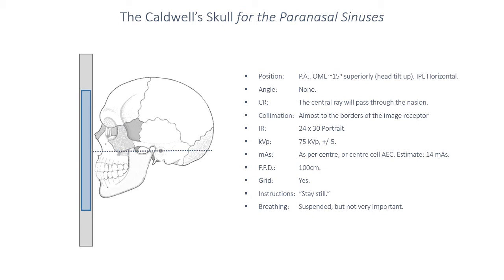That means the anatomy also needs to be moved and tilted to correspond to this change in beam angulation. As such, instead of having the nose and forehead against the image receptor, the chin and head is tilted up 15 degrees from the previous position. The patient is in a PA position with the orbitomeatal line approximately at a 15 degree cephalad angulation — that is to say the head is tilted up and the interpupillary line is horizontal. We centre right through the middle of the nasion, and in all other ways it is the same as the Caldwell skull for the cranial vault. Some radiographers advocate positioning a little more superiorly so as to show the entirety of the frontal sinus as well.